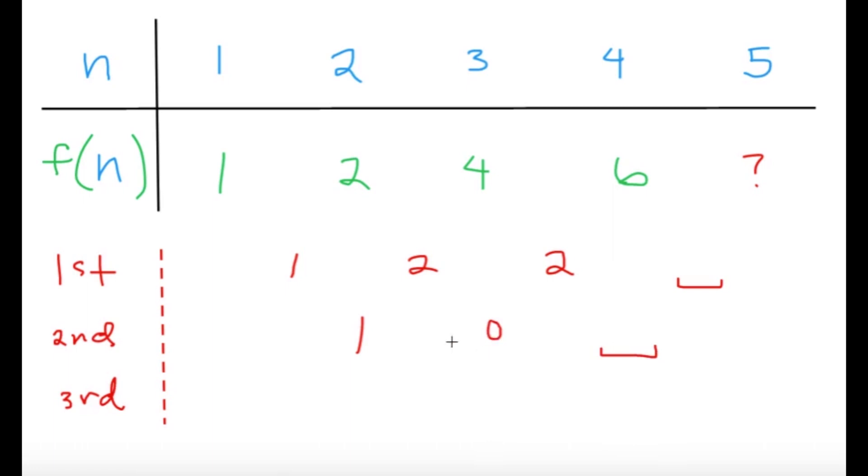And the third difference, which we know that this part here should be constant. So, from 1 to 0, that's negative 1. So, we know that since the third difference must be constant, this part should be negative 1. So, from 0 to this number over here, it should be negative 1. So, I add negative 1.